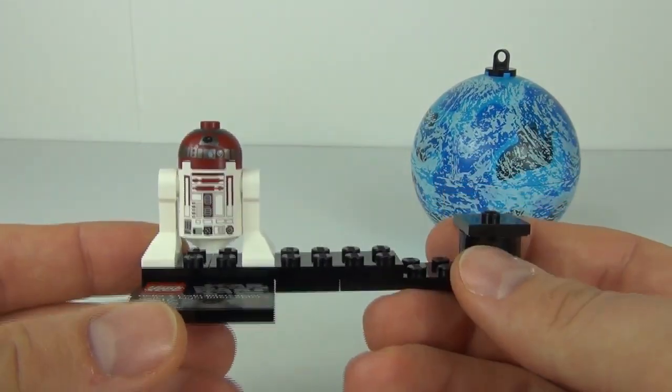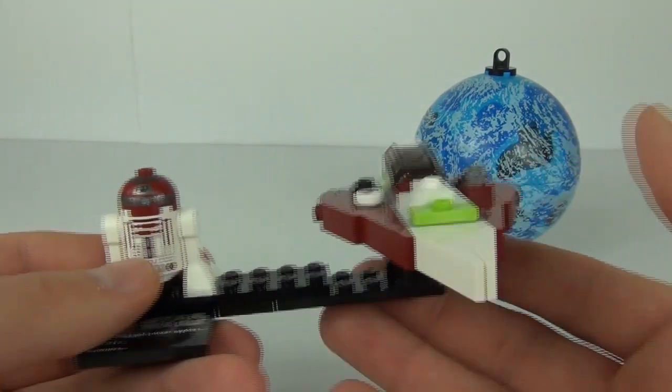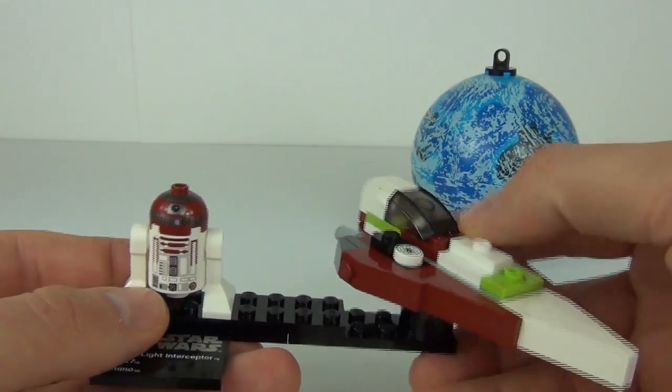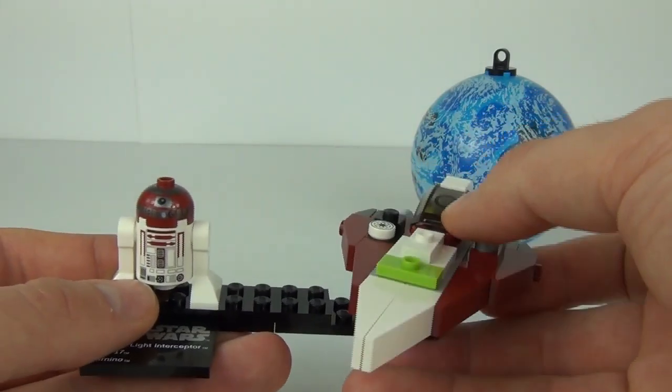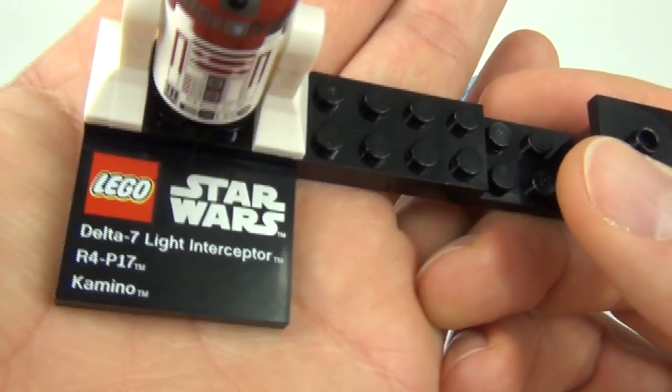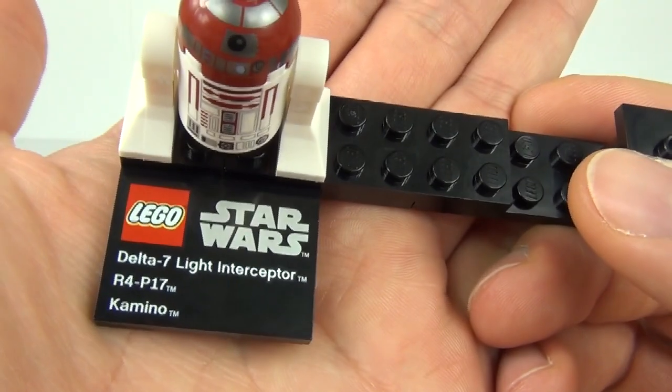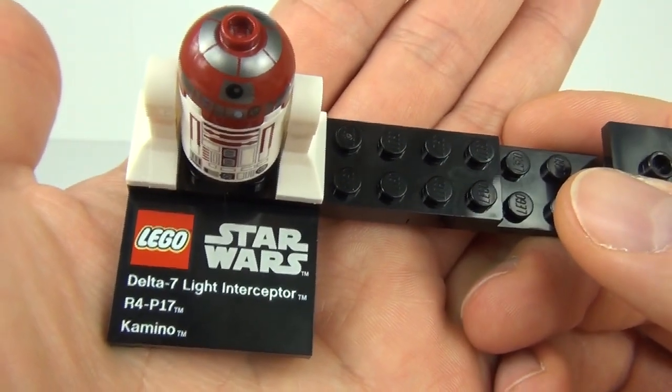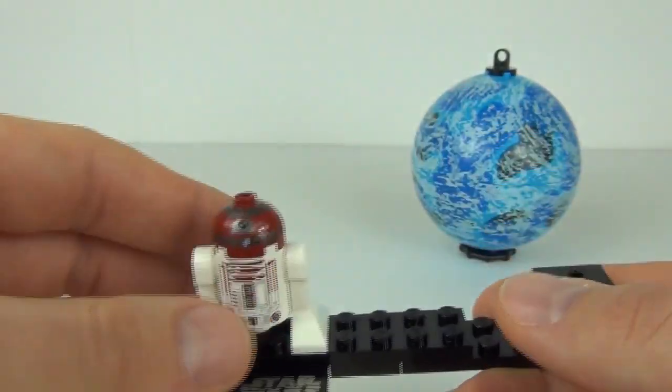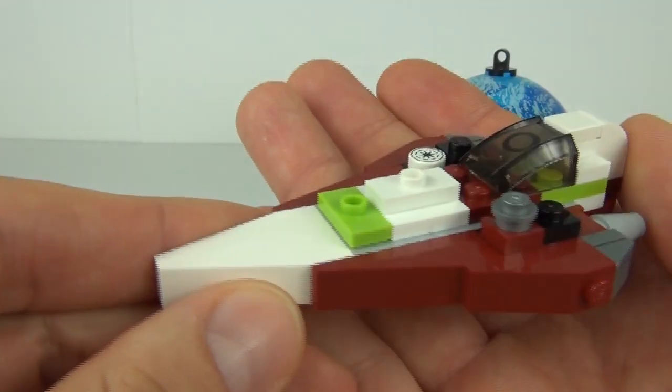We have the stand as normal. And we get R4-P17 standing on there. And then your vehicle will just attach to that. You can actually rotate it because it's only on one stud. Then that will come off easily as well. You do get the plaque again which I love. You get Delta 7 Light Interceptor which is the vehicle, R4-P17 the Astromech Droid, and Kamino which is your planet.